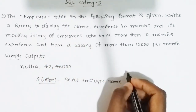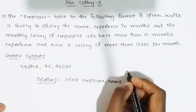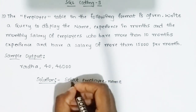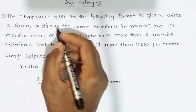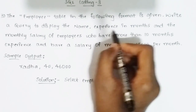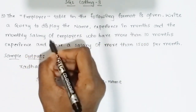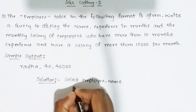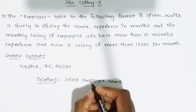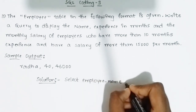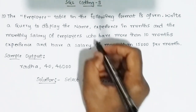Let's directly see the solution. What you need to display is the name, experience in months, and the monthly salary. So you write a SELECT statement: SELECT employee_name, then comma, experience_in_months.